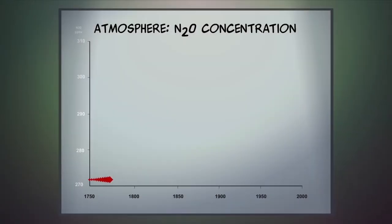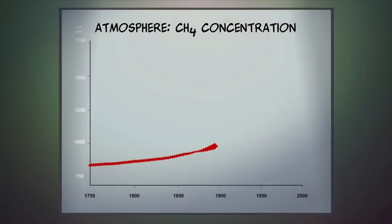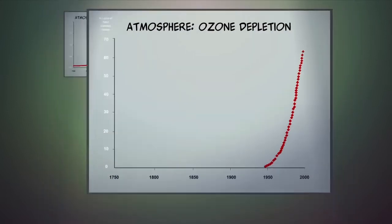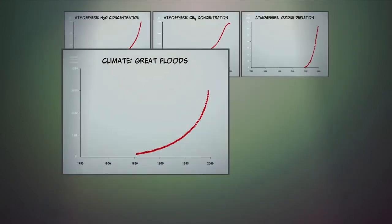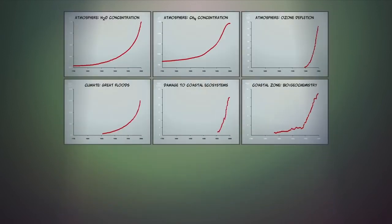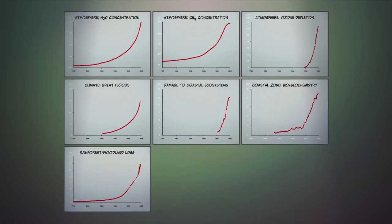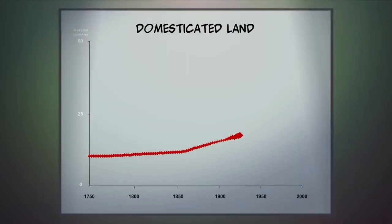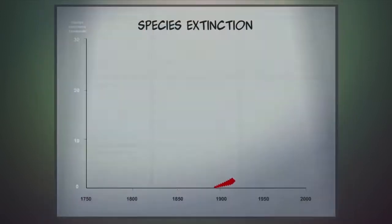Economic expansion has resulted in increases in atmospheric nitrous oxide and methane, ozone depletion, increases in great floods, damage to ocean ecosystems, including nitrogen runoff, loss of rainforest and woodland, increases in domesticated land, and species extinctions.